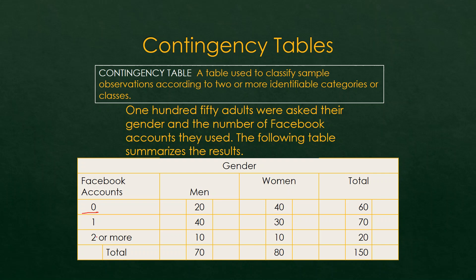There are lots of ways to interpret this contingency table. There is one Facebook account category or two or more Facebook accounts. Of the men who have zero Facebook accounts, there are 20. There are 40 women who have zero Facebook accounts. There are 40 men who have one Facebook account, 10 men who have two or more, 30 women who have one, and 10 women who have two or more. The total is 60 individuals with zero Facebook accounts, 70 with one, and 20 with two or more.